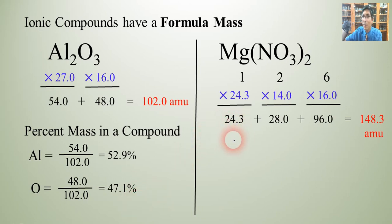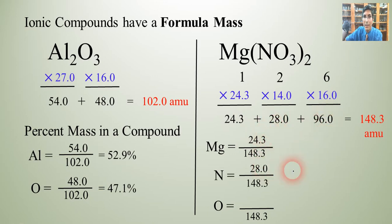So magnesium nitrate works the same way. We take the 24.3 for magnesium and the 28 for the nitrogen and the 96 for the oxygen and divide them all by the total formula mass which is 148.3 and we get the individual percent masses for each element.